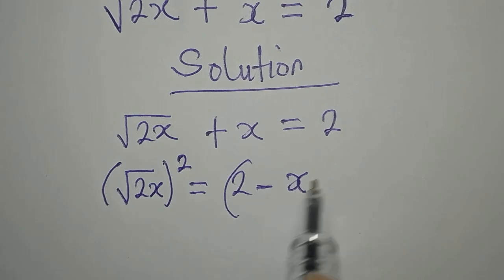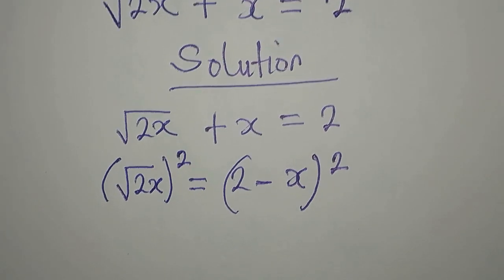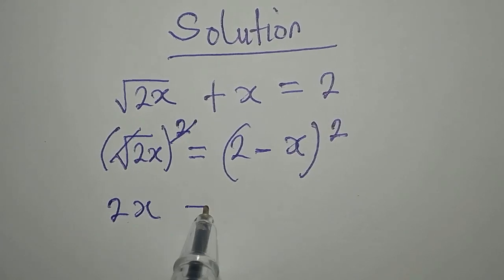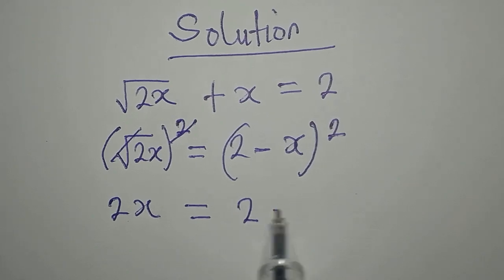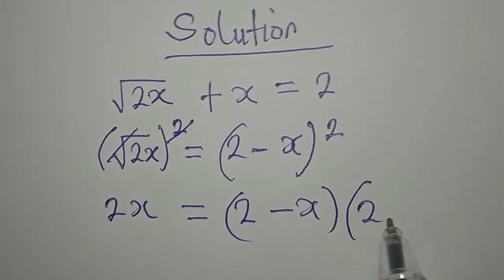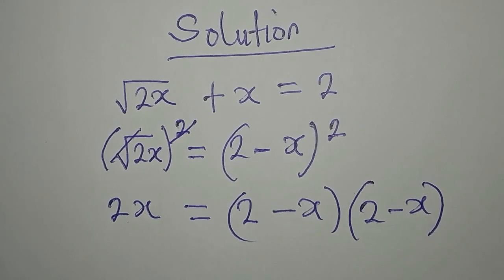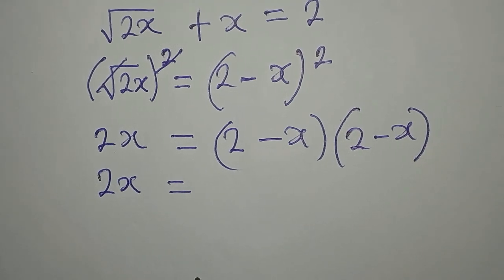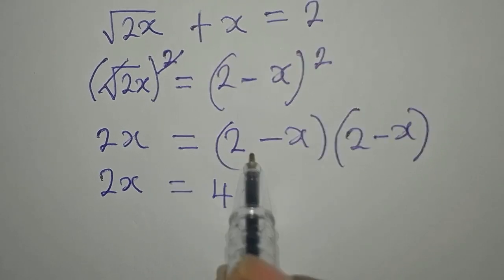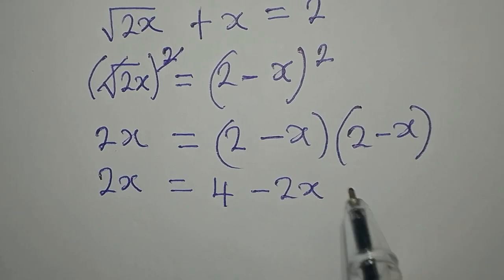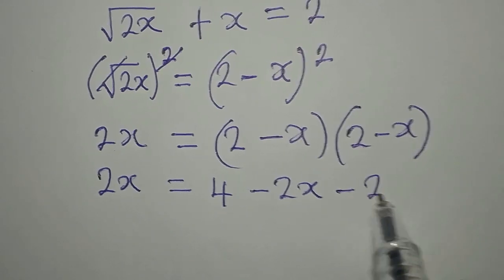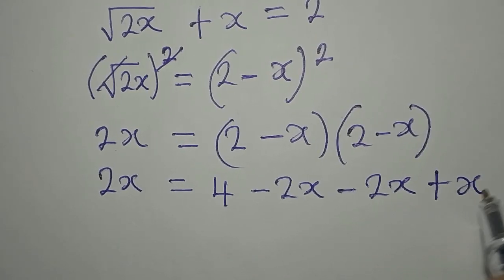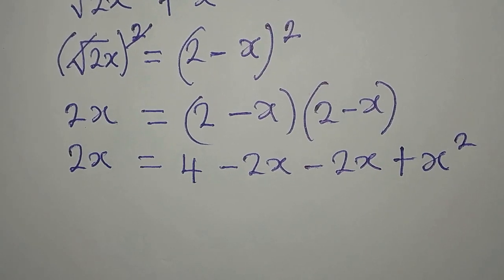Now we can square both sides. We square the left side and square the right side — remember 2x is alone and it equals 2 minus x times 2 minus x because of the square. Expanding: 2 times 2 is 4, 2 times negative x is minus 2x, negative x times 2 is minus 2x, and negative x times negative x gives us plus x squared.